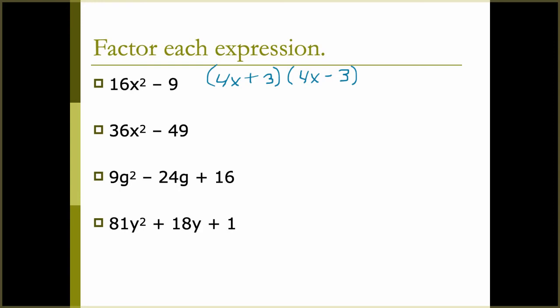Here we have 36x² - 49. We should always look for a GCF first — this one does not have one. We have a perfect square in 36x² and 49 is also a perfect square. The square root of 36x² is 6x, and the square root of 49 is 7. We get two factors: (6x + 7)(6x - 7).